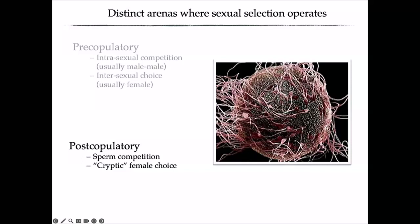In 1970, the field underwent a revolution with Geoff Parker's papers on sperm competition, leading to the realization that sexual selection did not end with mating but continued in the form of post-copulatory sexual selection. This can be broken down into sperm competition and cryptic female choice, whereby females may be able to assess, evaluate, and bias utilization of sperm.